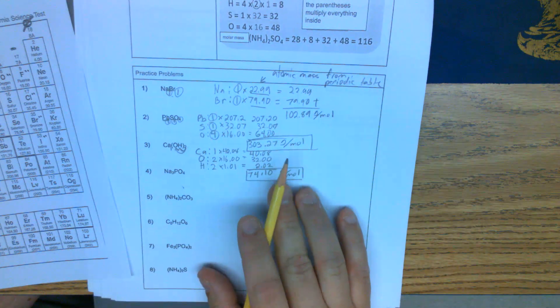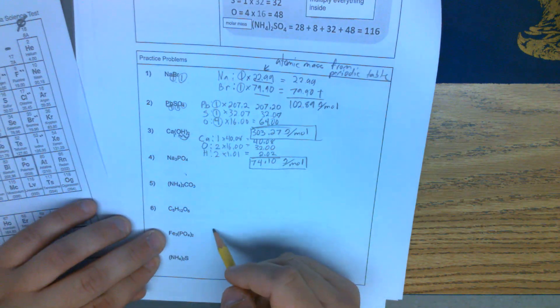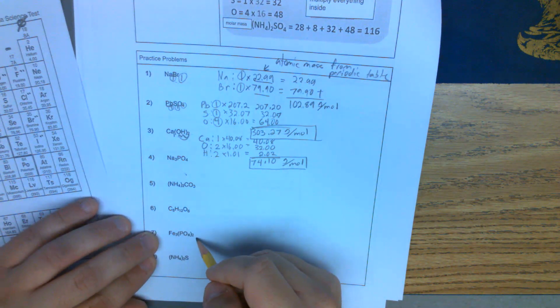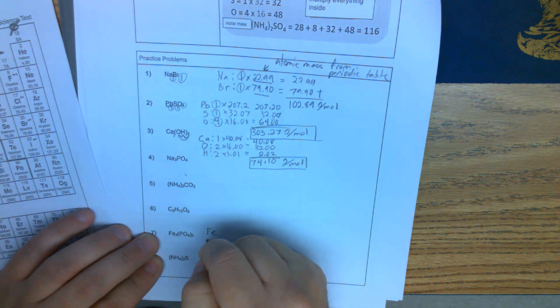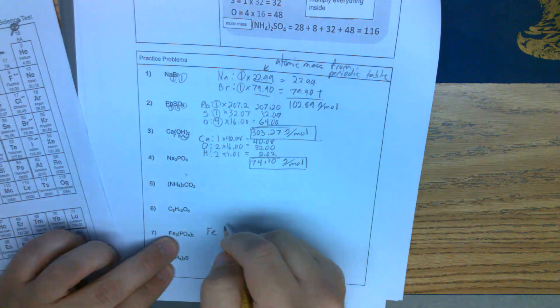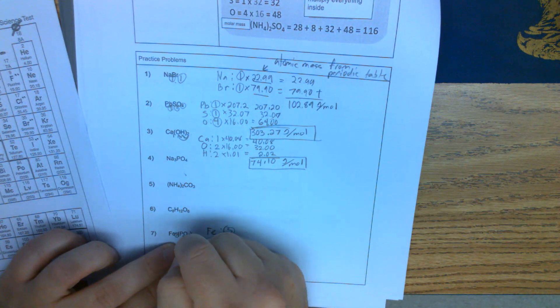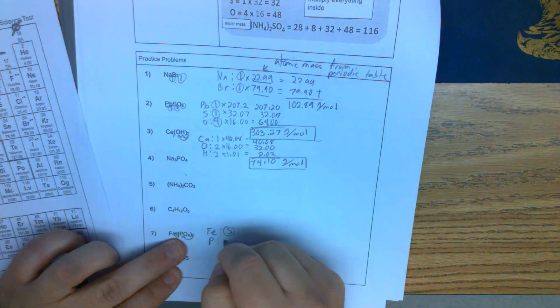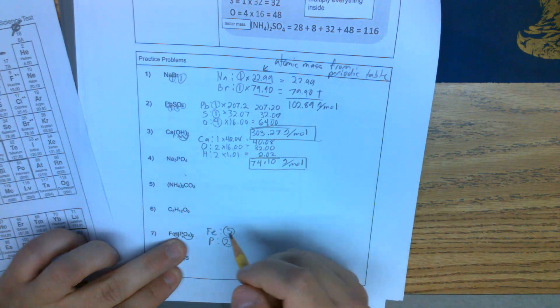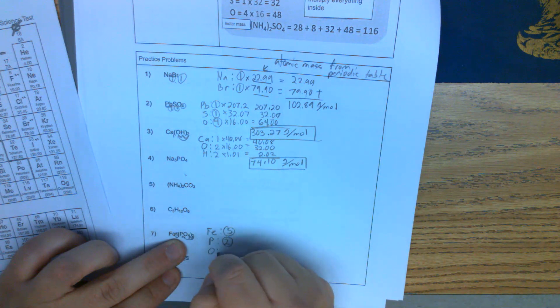Let's look at the last bit for this. We have something similar here. If we're reading this, we have Fe, we have 3 Fe, P, 2 times 1 gives us 2 P. Okay, O, 2 times 4 gives us 8 O.